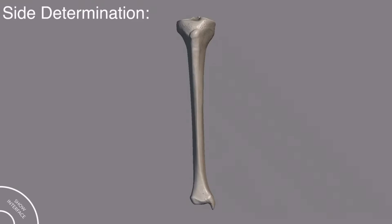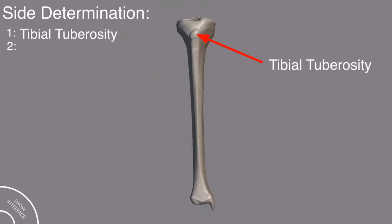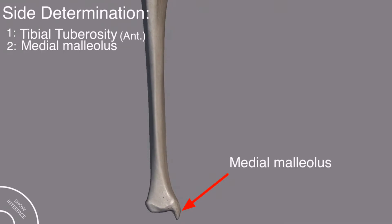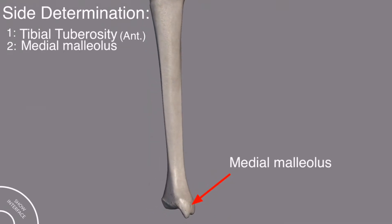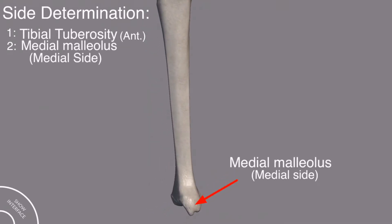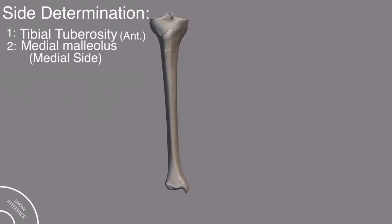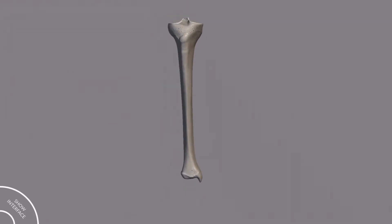Now for the side determination of the tibia bone, you have to remember two main points: the tibial tuberosity should be on the anterior side, and the medial malleolus should be on the medial side. So this is the right tibia bone. Now let's come to the bony landmarks of the tibia bone.